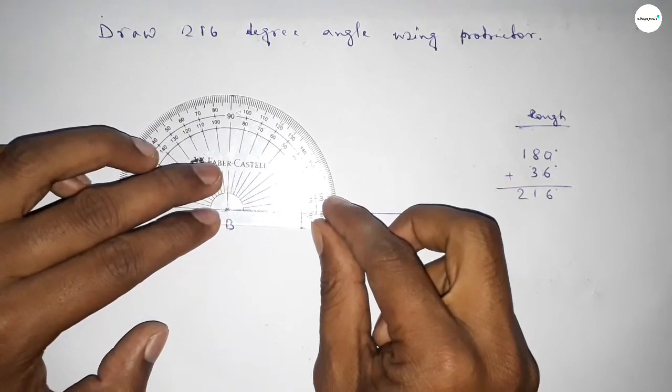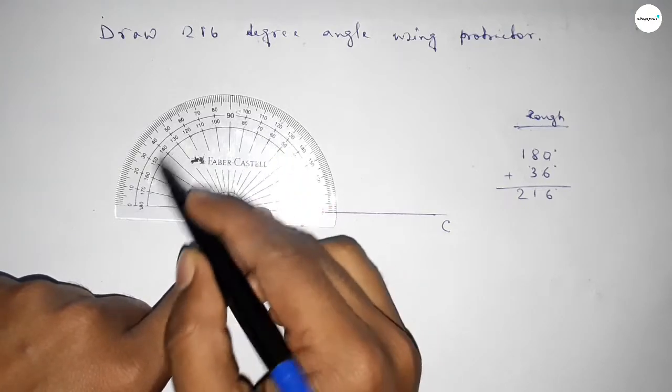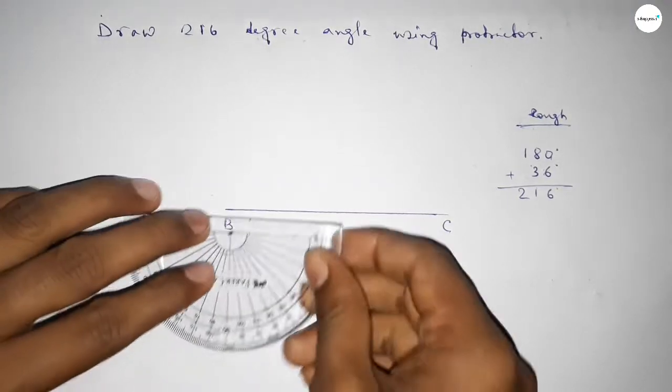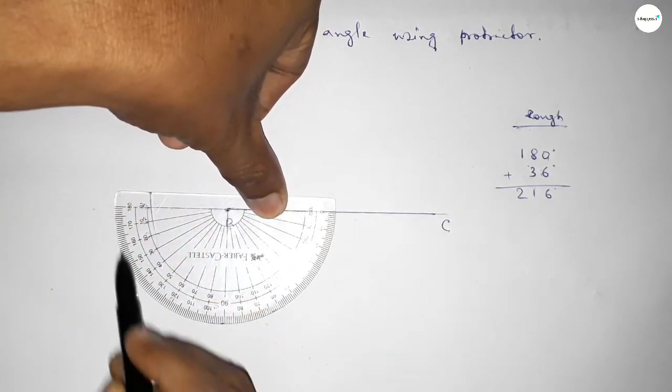So putting the protractor on the point B by this way and counting 180 degree. So this is 180 degree. Plus, putting the protractor on the point B by this way and counting 36 degree angle.